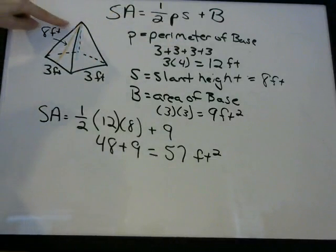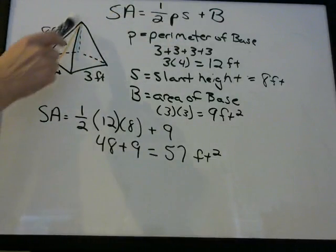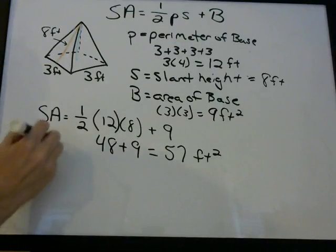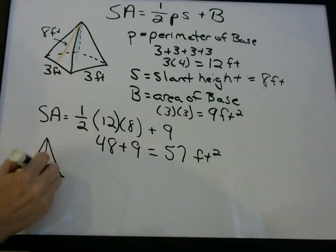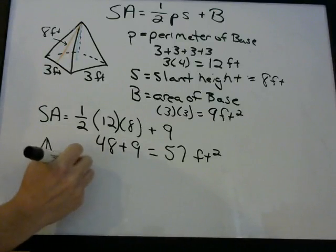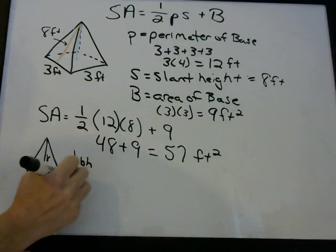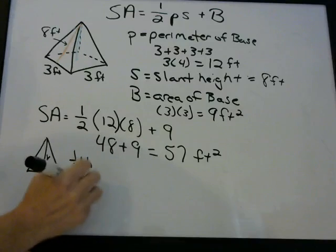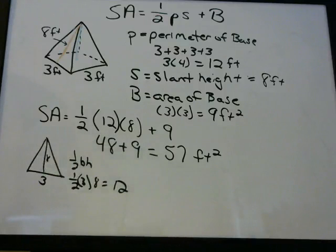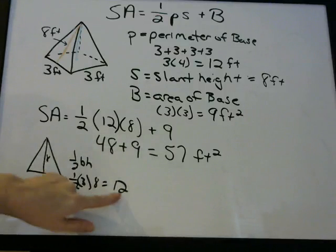Because if you look at just one of the faces — all you have is a triangle whose height is 8 feet and whose base is 3 feet. What's the area of this triangle? It's one-half base times height.